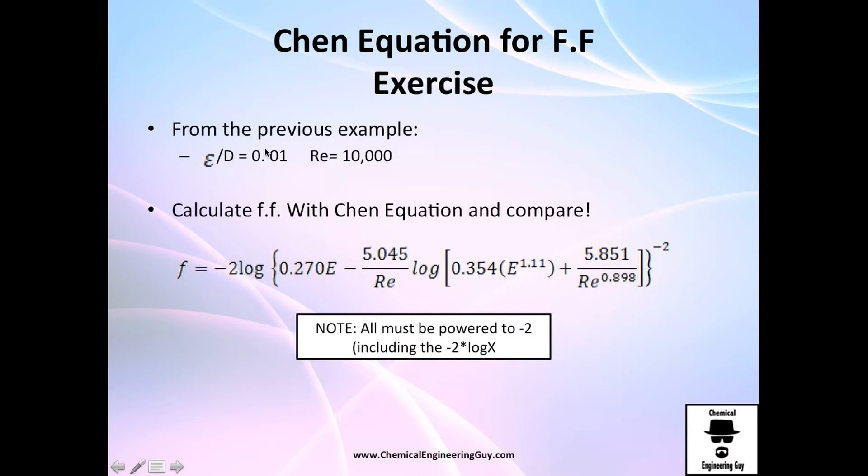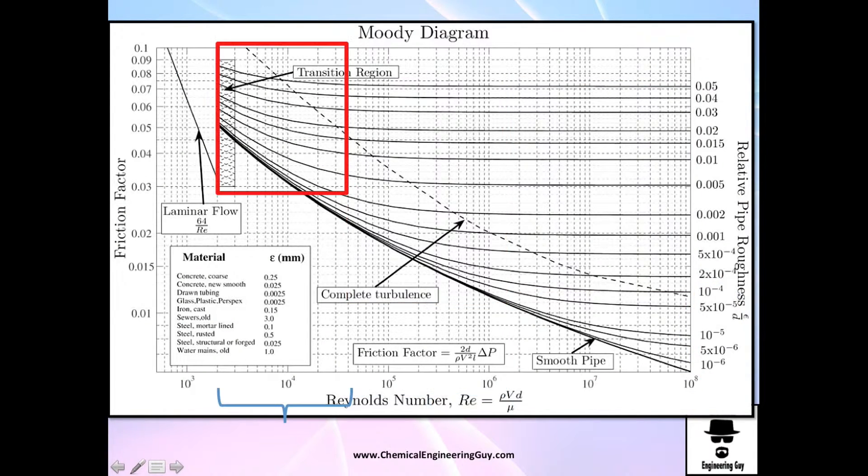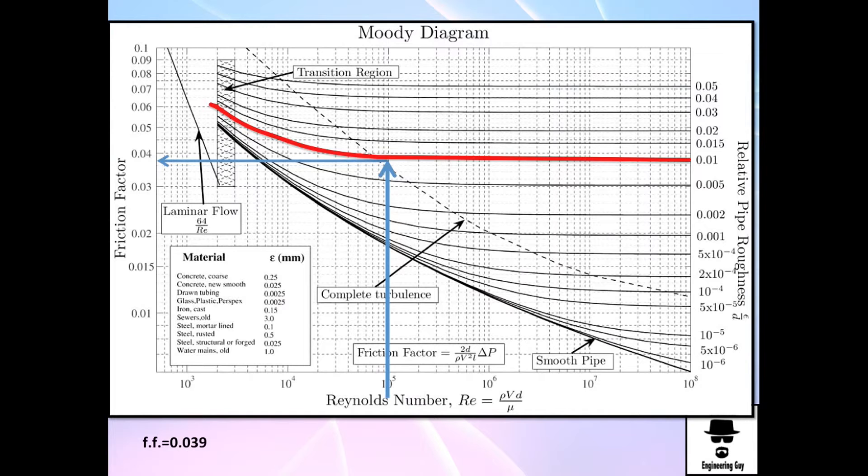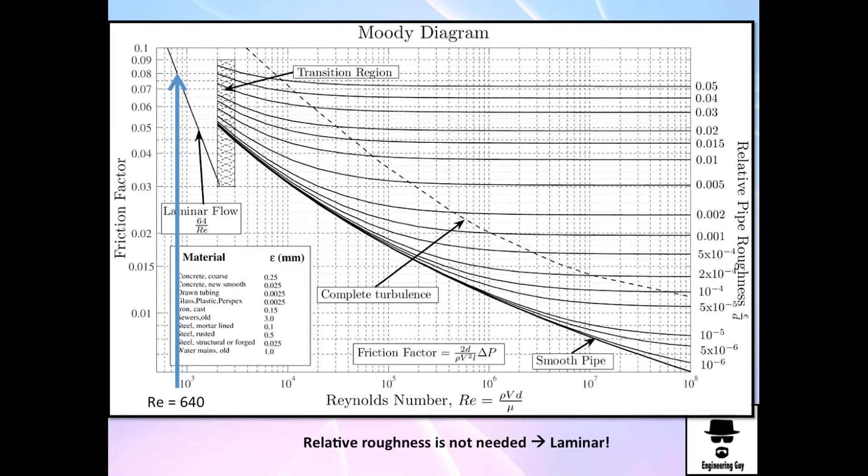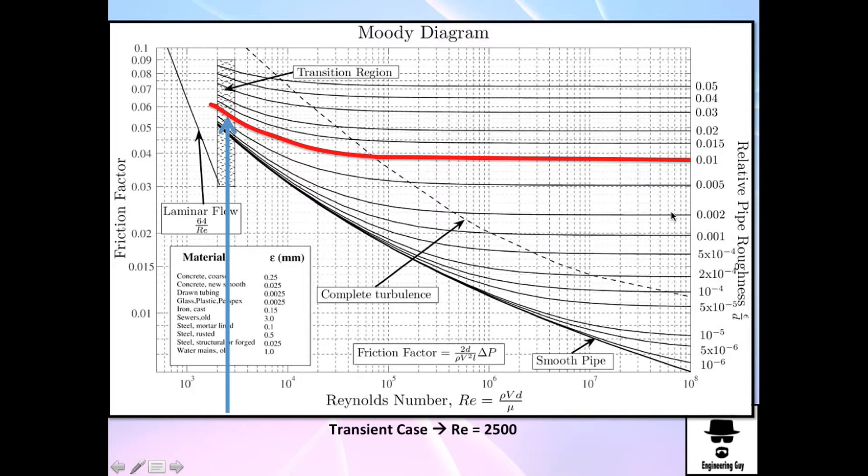So let's calculate. If you remember the exercise before, let me go a little bit back here. It's way back. Okay, for this exercise guys, Reynolds is 100,000 and relative roughness of 0.01. Let's calculate it now with the Chen equation.